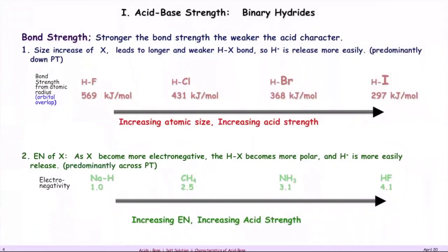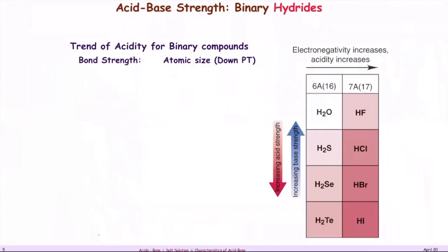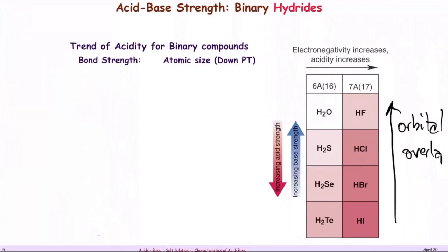The trend in acid strength going down the periodic table involves orbital overlap. The better the orbital overlap, the stronger the bond — but wait, stronger acids are found going toward the bottom because the larger atoms create poor orbital overlap, making a weaker bond and a stronger acid.